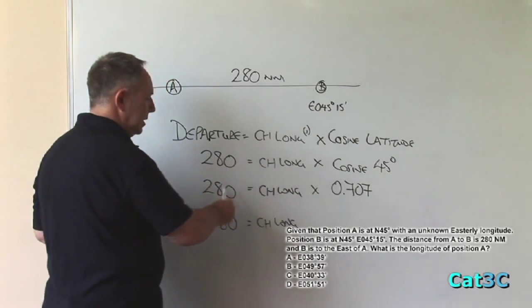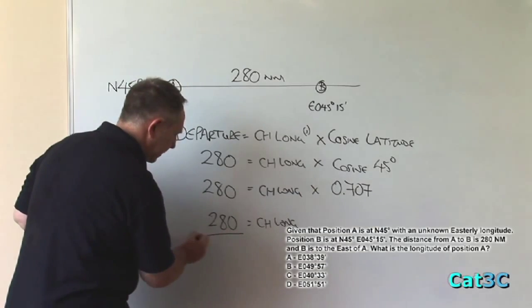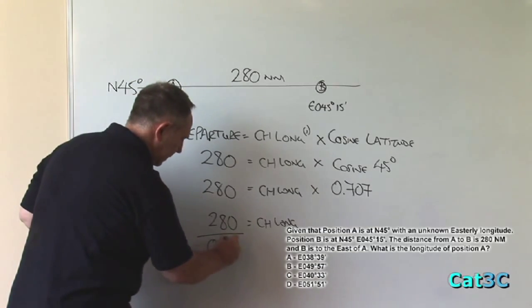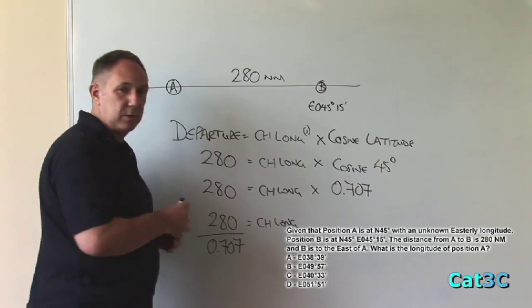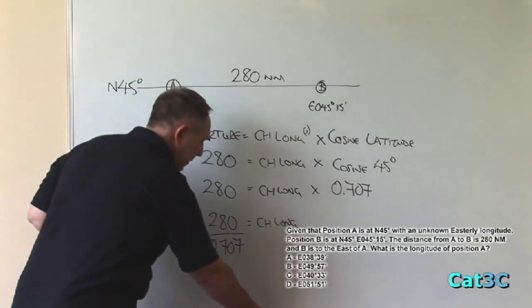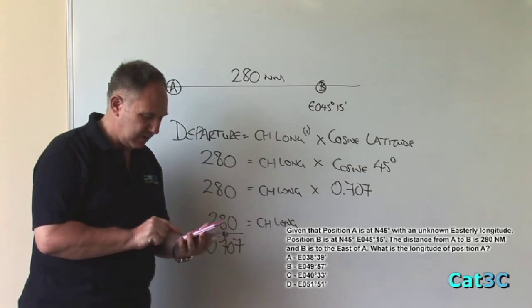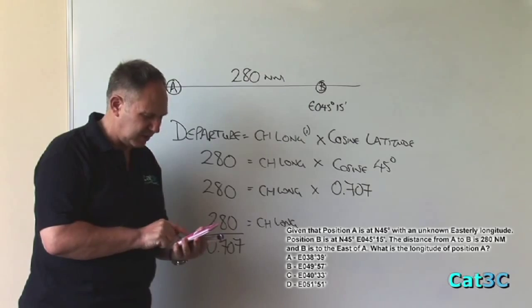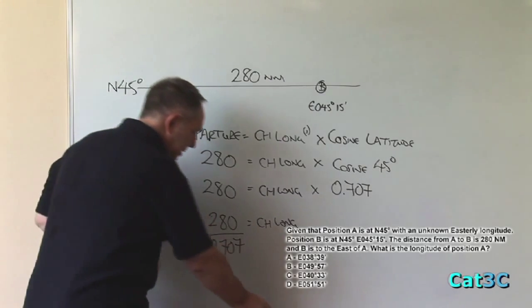If you change sides, you change signs. So multiplied becomes dividing. So 280 divided by 0.707 gives us the change of longitude. Referring to my calculator, 280 divided by 0.707 equals 396 minutes.